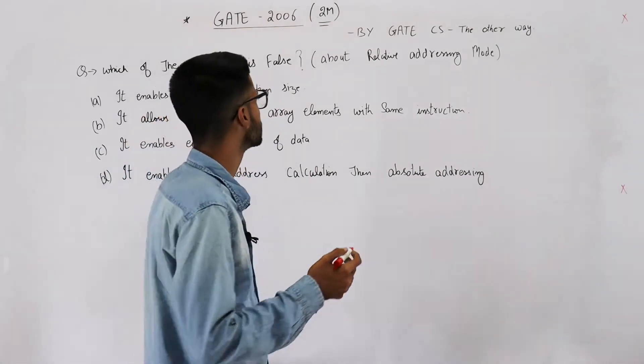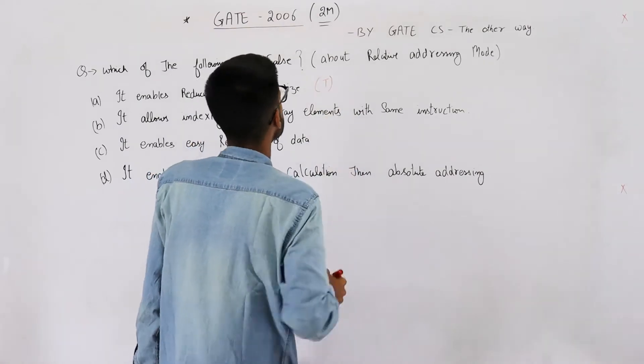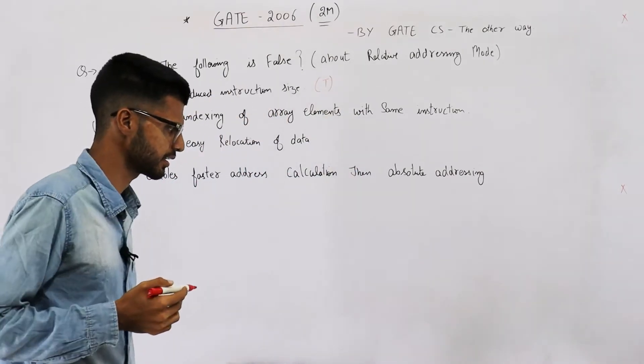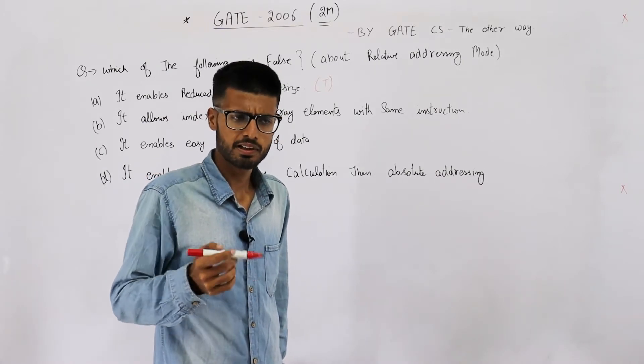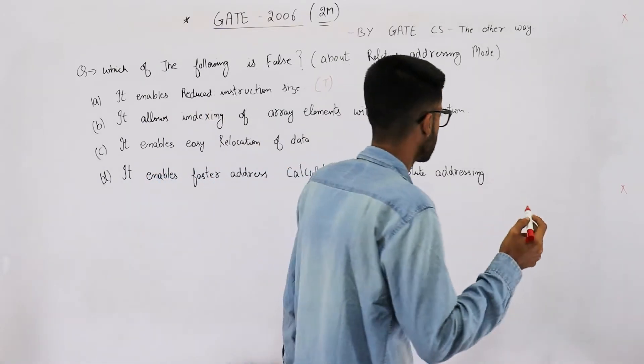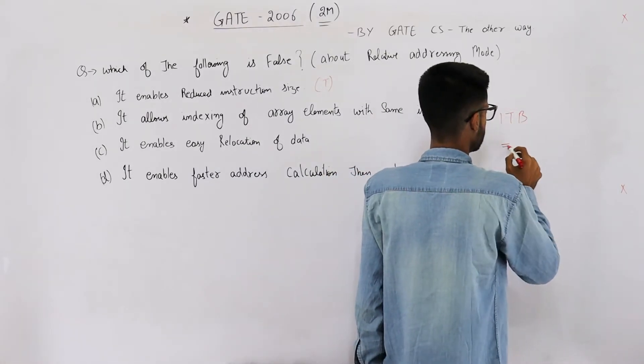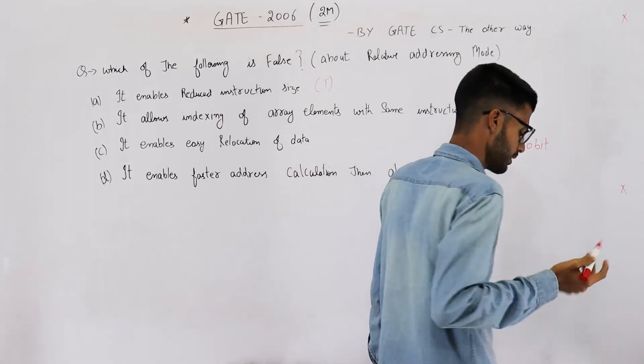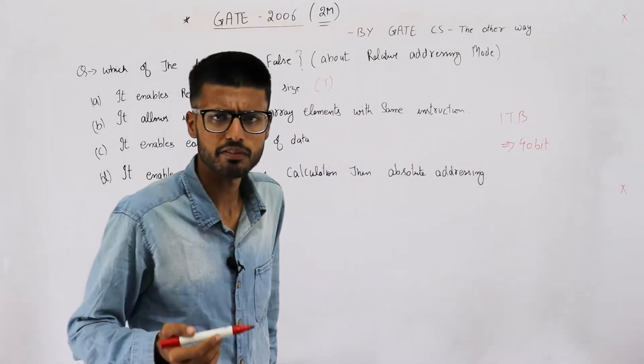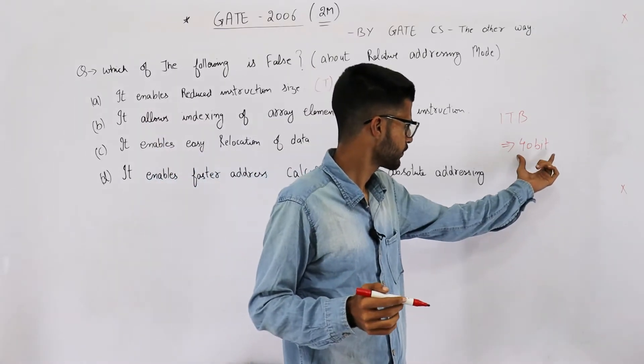this one is true because relative addresses will be shorter than absolute addresses. Instead of writing the absolute address, just write a relative one. Say you have a very large memory, maybe around one terabyte. One TB memory means a 40-bit address, and a program may be of a few hundred lines only. So instead of specifying this 40-bit address,